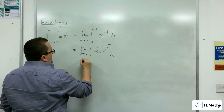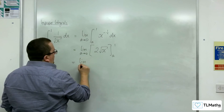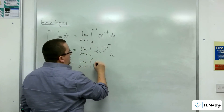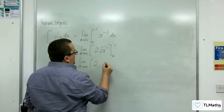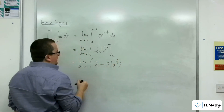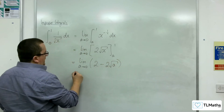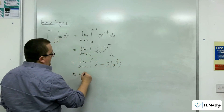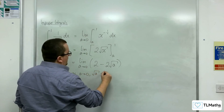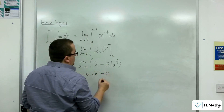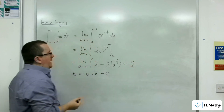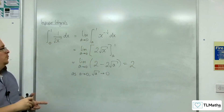This is the limit as a tends to 0. Substituting 1, we get 2. Substituting a, we get 2 root a. And as a tends to 0, the square root of a tends to 0. So this is going to be equal to 2.